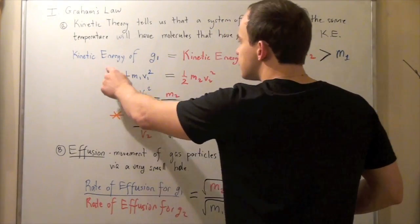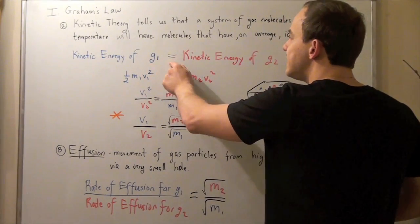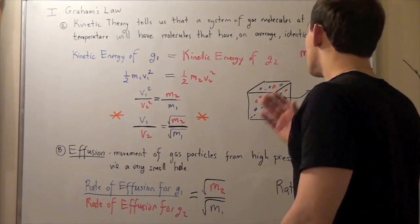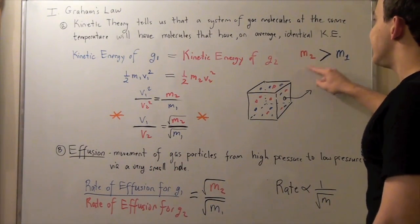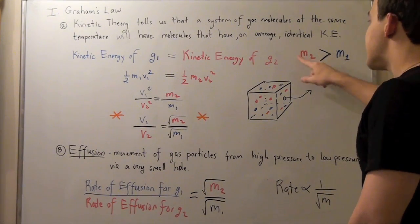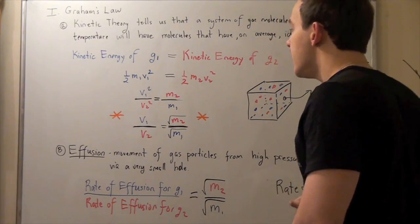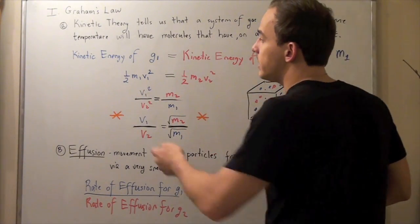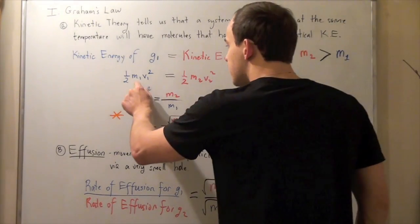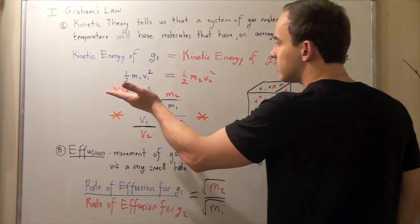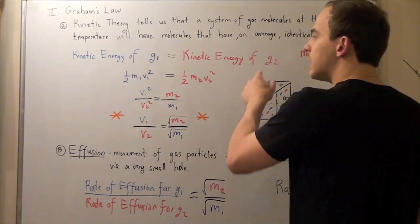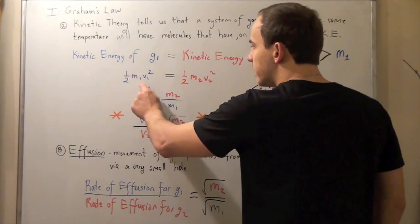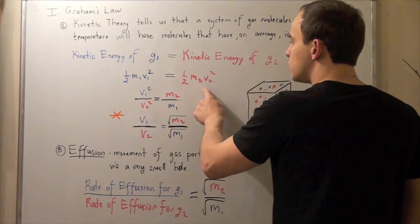Let's suppose the kinetic energy of some gas molecule 1 is equal to kinetic energy of gas molecule 2 because they have the same temperature. Now, let's also assume that gas molecule 2 has a larger mass than gas molecule 1. So gas molecule 2 is heavier. Let's rewrite these in terms of our mathematical formula for kinetic energy, namely 1/2 mv squared. The subscript 1 simply represents gas molecule 1 and the subscript 2 represents gas molecule 2. So 1/2 m1 v1 squared equals 1/2 m2 v2 squared.